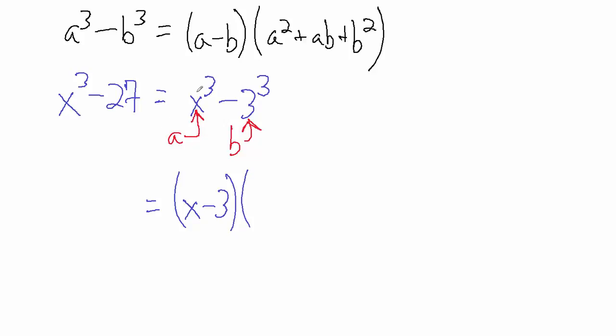And then in here we're gonna have A squared. Since A is x, then A squared is just x squared. And then plus AB - what's A? A is x. What's B? B is 3.